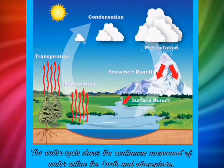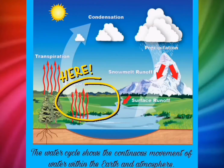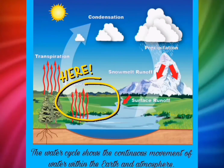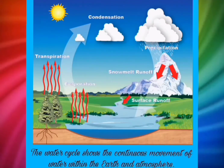Energy sources include the sun, the atmosphere, the earth, or objects on the earth such as people. The process by which liquid water enters the atmosphere as water vapor is called evaporation, through the help of the energy sources mentioned.